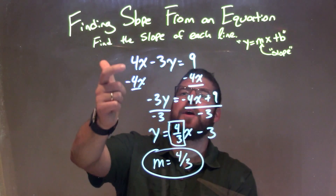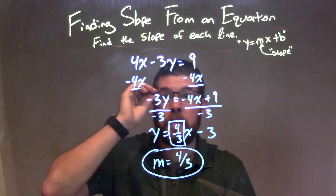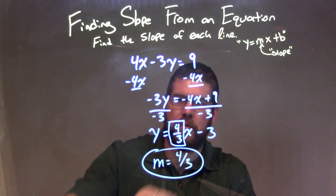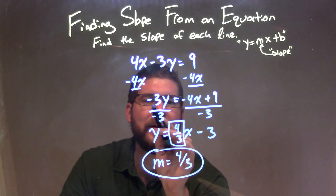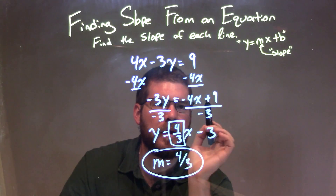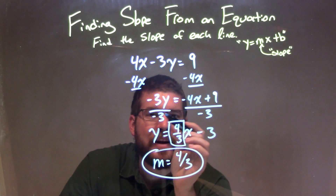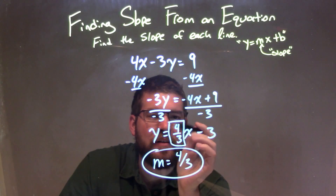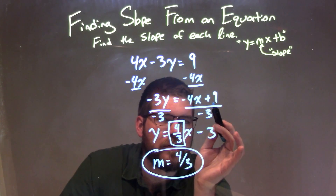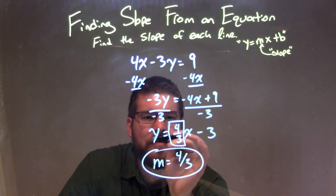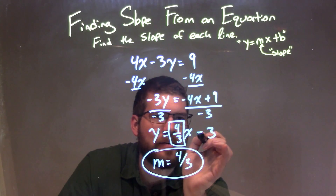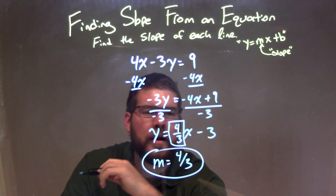Let's recap. We're given 4x minus 3y equals 9. I subtracted 4x from both sides to try to get y by itself, giving me negative 3y equals negative 4x plus 9. Then I divided by negative 3 on both sides, making sure it applied to both parts on the right-hand side. That left me with y by itself on the left, equal to positive 4 thirds x minus 3 on the right.